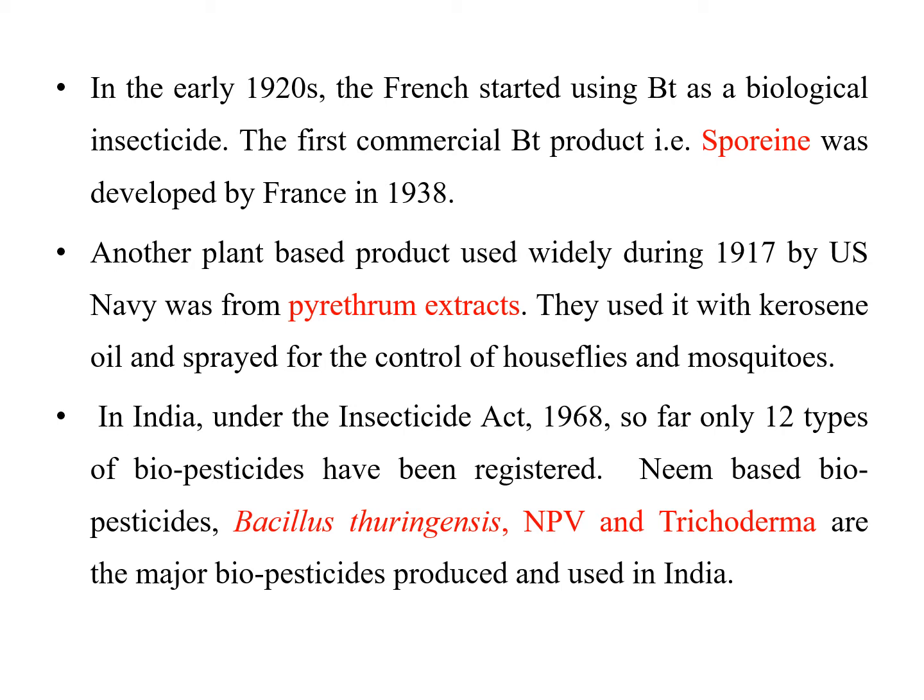Another plant-based product widely used in 1917 by the U.S. was pyrethrum extract. They used this with kerosene oil and sprayed it for the control of housefly and mosquitoes. After that, in India in 1968, under the Insecticide Act, only 12 types of biopesticides were registered, among which neem-based biopesticides, Bacillus thuringiensis, NPV, and Trichoderma are the major biopesticides produced and used in India.